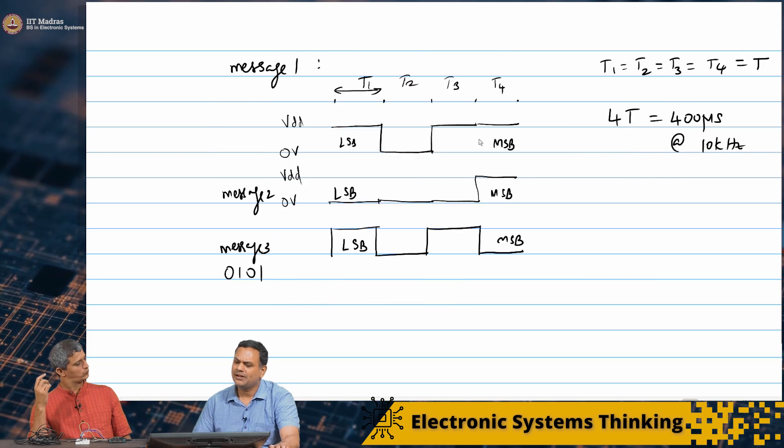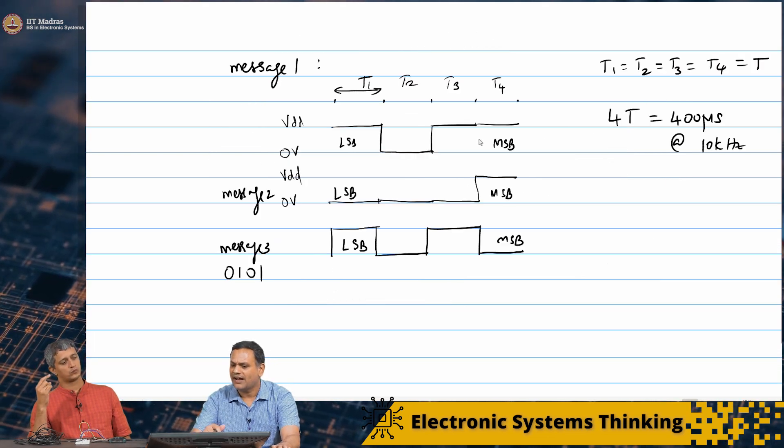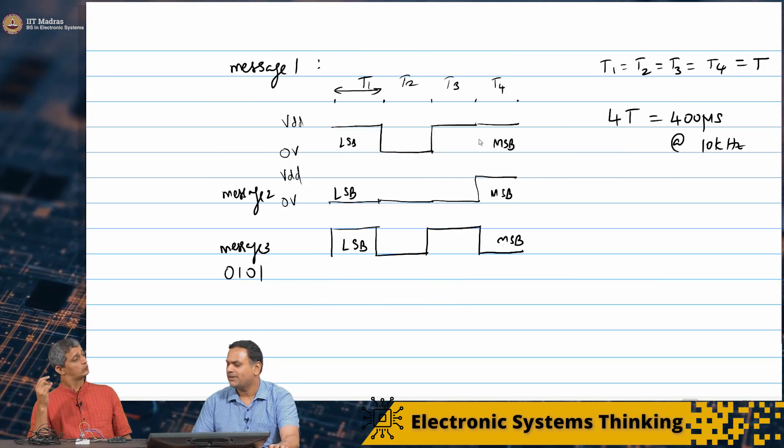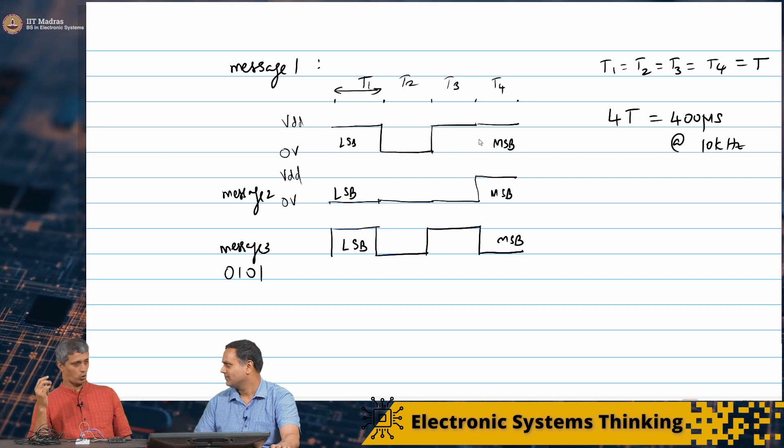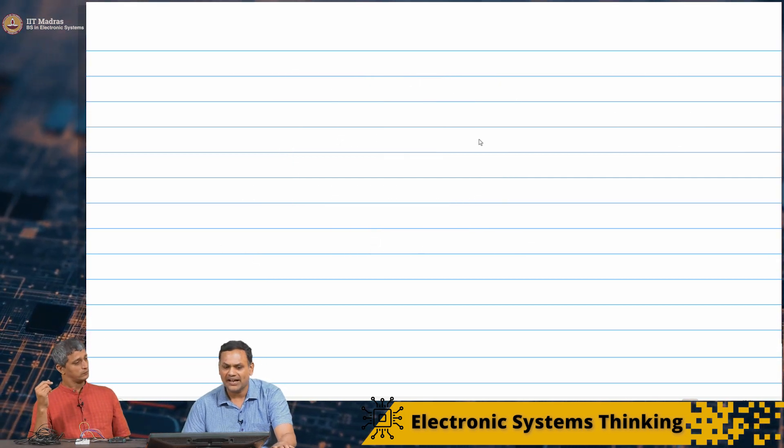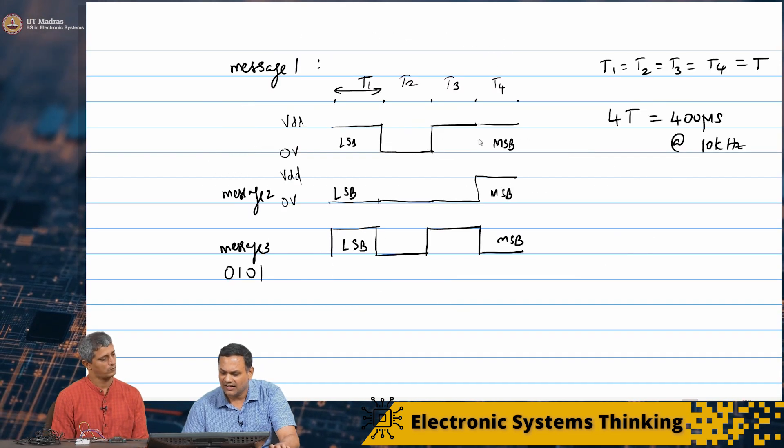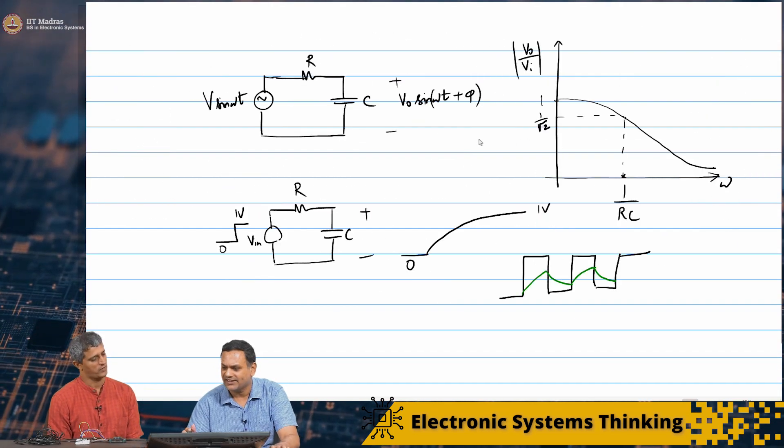Suppose I change for the different messages. Can I change t1, t2, t3, t4? Like basically t. Suppose my idea is to change this time period t.